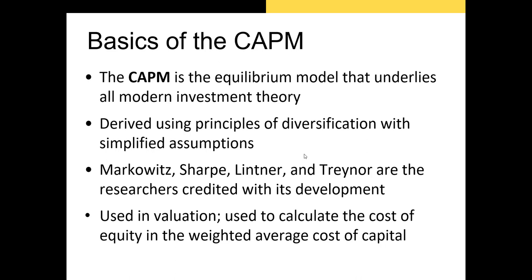The CAPM was developed by three different financial economists: William Sharpe, Jack Treynor, and John Lintner, who are often given credit for developing the model. They each worked on it separately, and as a result William Sharpe and Harry Markowitz were awarded the 1990 Nobel Prize in economics, in part for their contributions to the development of this model and portfolio management in general.